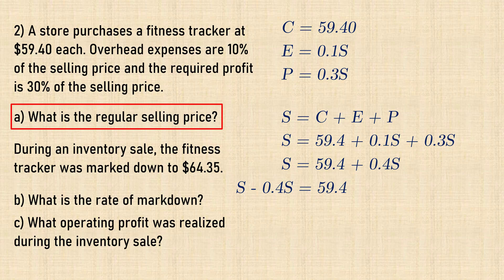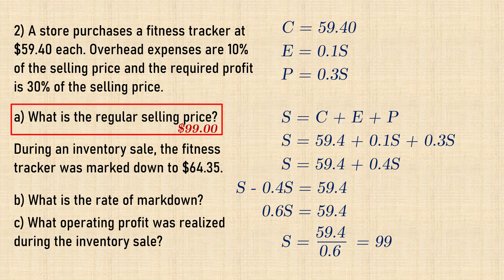And bringing the 0.4S to the left of the equal sign, we have S minus 0.4S equals 59.4. That is, 0.6S equals 59.4. Thus the regular selling price equals $99.